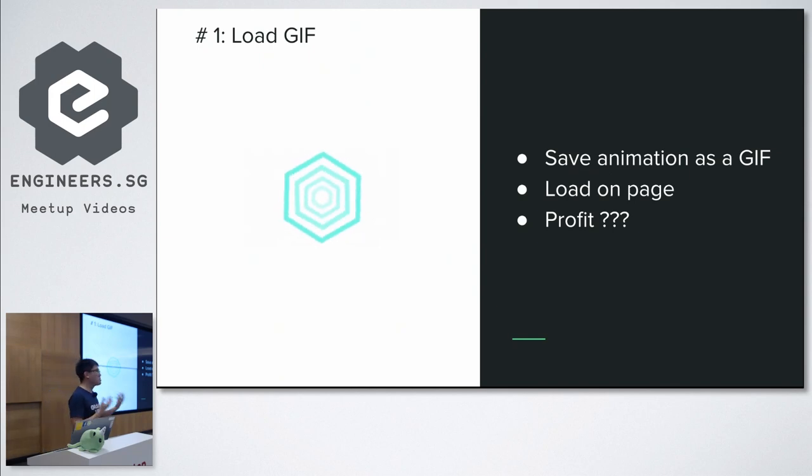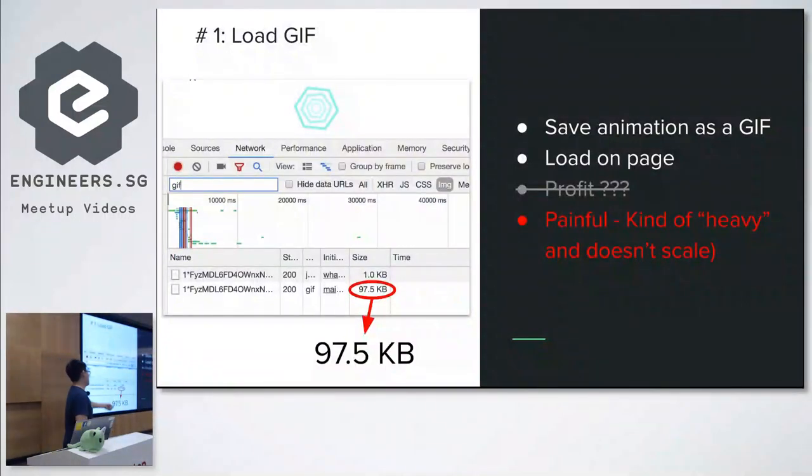So before I go into our actual approach, let me just talk about a few approaches that we eliminated. One of the most easiest things to do, we want to do an animation like this. Create a GIF. Load it in the webpage. But what's the problem? You can see. Very big size. Like 97.5 kilobytes. It's not exactly scalable. You're eating up their bandwidth for just loading a site. Not exactly a good solution.